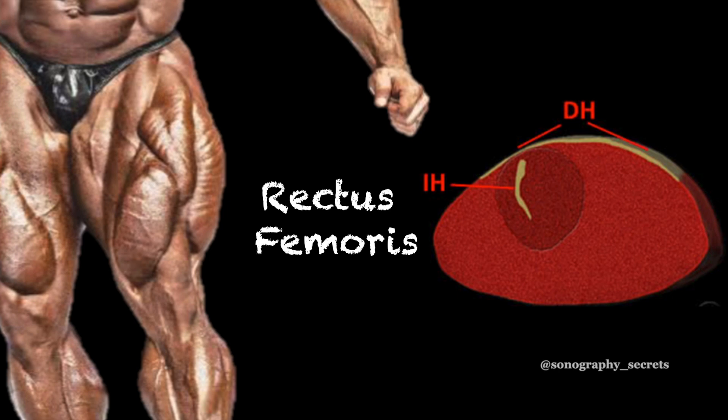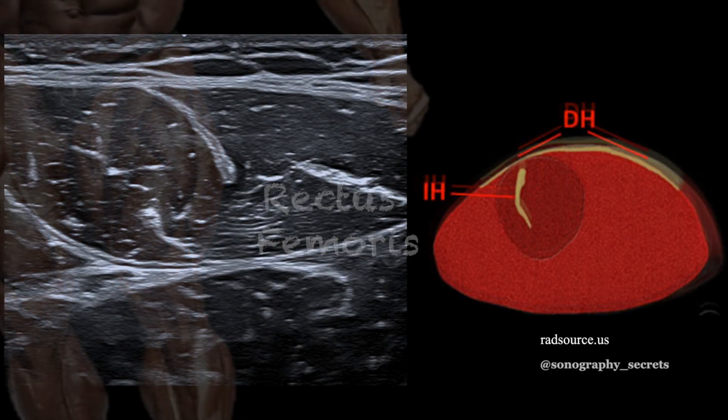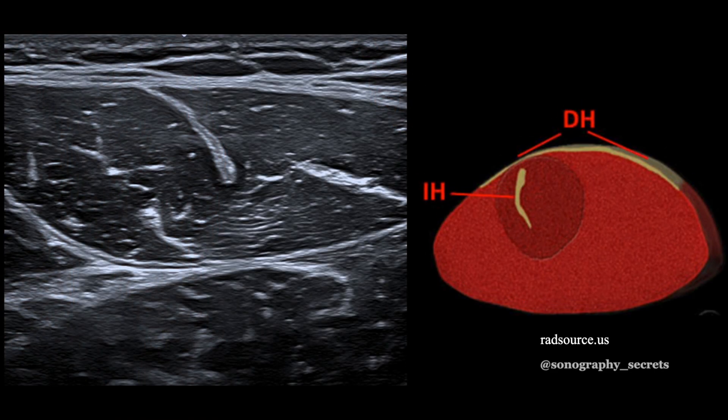Rectus femoris is a unique and complex muscle anatomically, and as such has a number of unique and complex ways in which the muscle will fail. If we understand how something is constructed, we understand how and why something fails. Rectus femoris is frequently described as a muscle within a muscle.